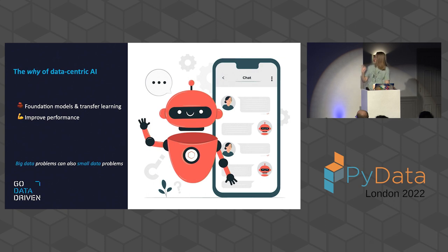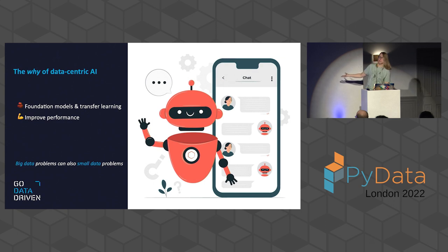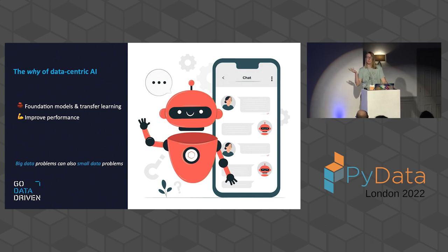This becomes particularly relevant for small data problems. Yes, you can just collect more data — but even big data problems are often small data problems in the long tail. Consider a chatbot: there are questions asked very frequently, like changing an address, but there's a huge number of questions you just don't have much data for because only a few people ask them. So you'd better make sure that data is good.